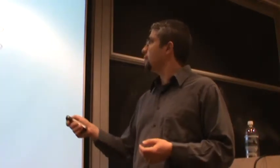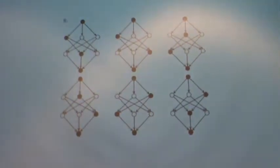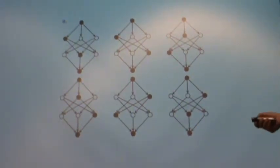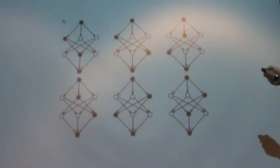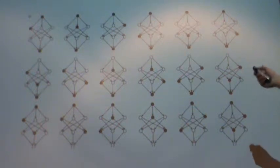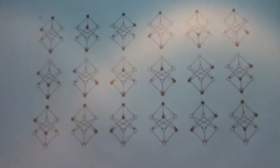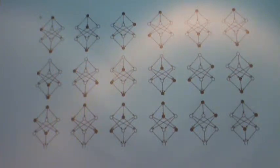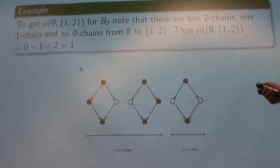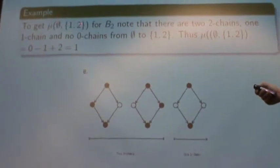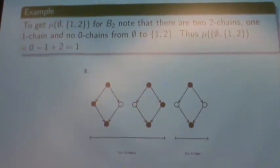Let's do some examples. Suppose we wanted the 3-chains in B3. The only way to get a 3-chain would be to start with a minimal and end with a maximal element, and the darkened vertices here show where those chains would be. If we wanted 2-chains, there would be a bunch more of them because we're not requiring that we start at the minimal and end at the maximal element. Let's also do an example with the Möbius function — let's go back to B2 and try to take the Möbius function from the minimal to the maximal element.